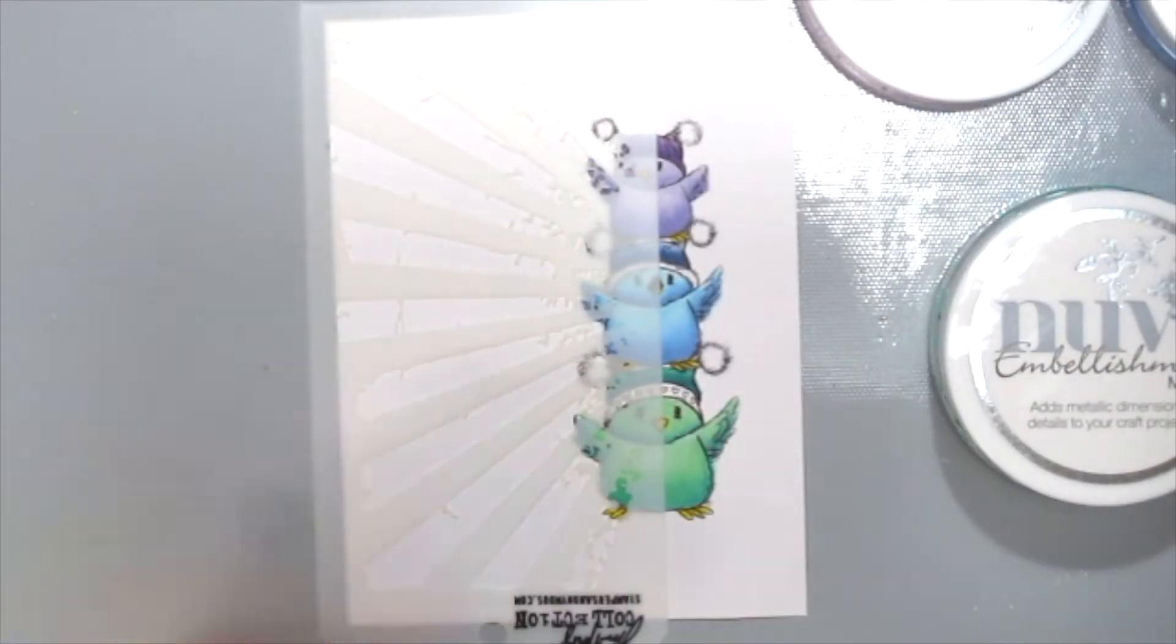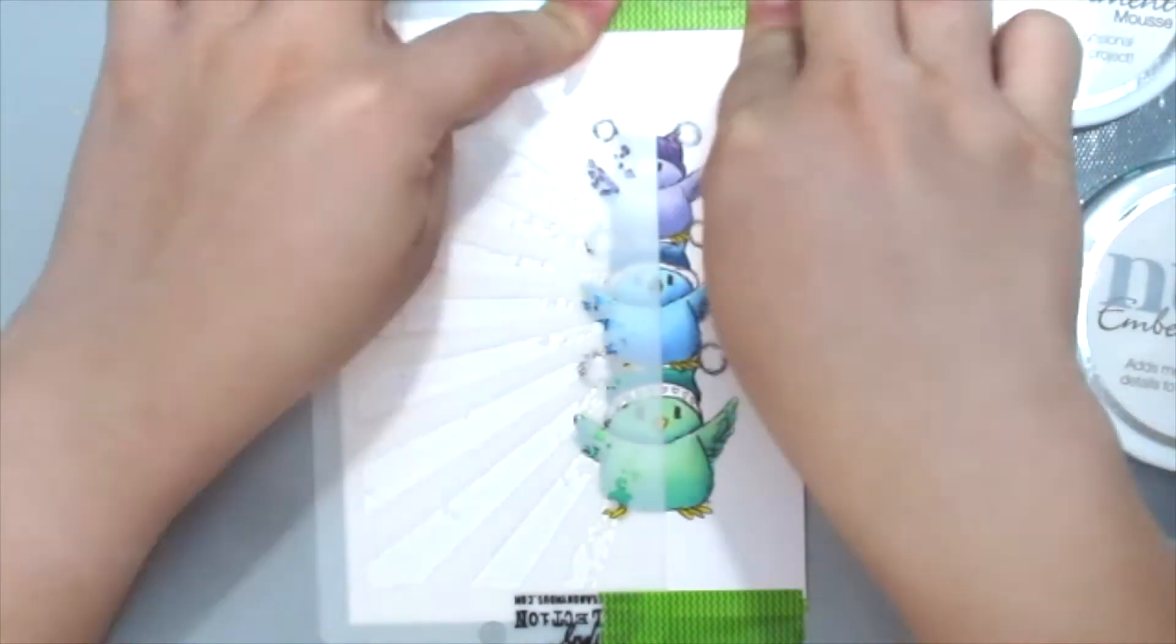I'm placing the stencil onto my card where I want the sunburst to be and securing it onto my mat with some washi tape.